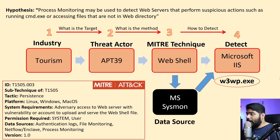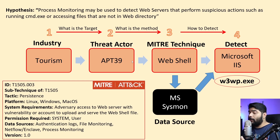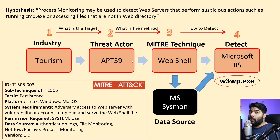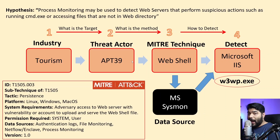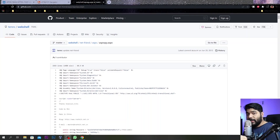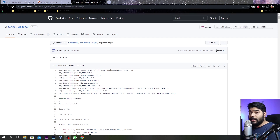Our target and threat actor are already known, so we are building the hypothesis based on hunting process execution and suspicious processes based on w3wp.exe. We will be leveraging Sysmon and endpoint telemetry data already present. That data is getting fed to the SIEM, which is Splunk. Before we start, this is the basic aspx that was used by this threat actor.